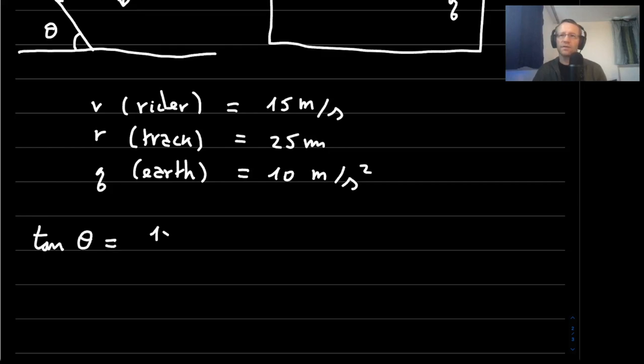We can calculate that the tangent of the angle of the track has to be 15 squared divided by 25 divided by 10, which is about 1, and therefore the angle of the track would have to be about 45 degrees because that's when the tangent is 1.